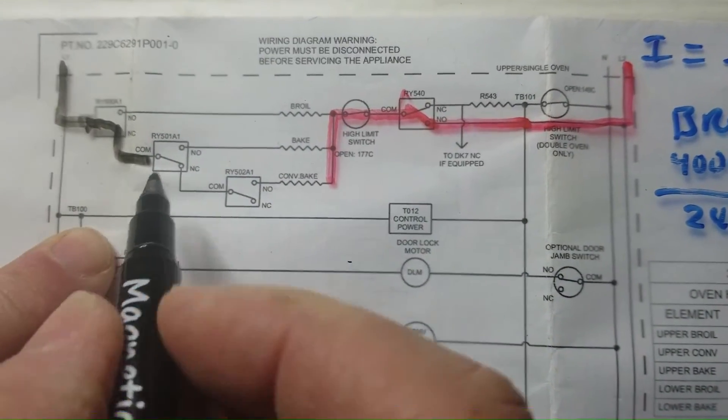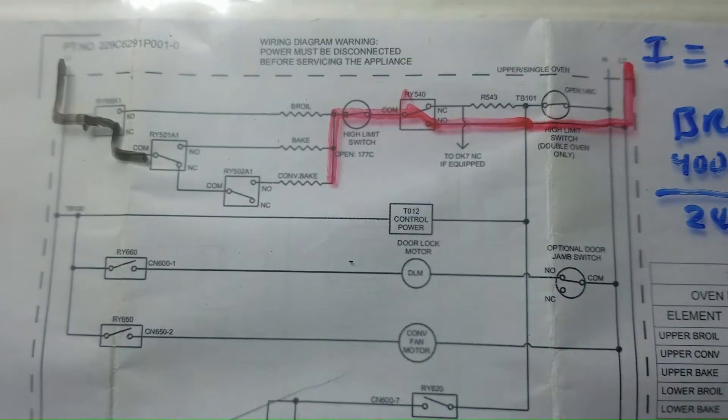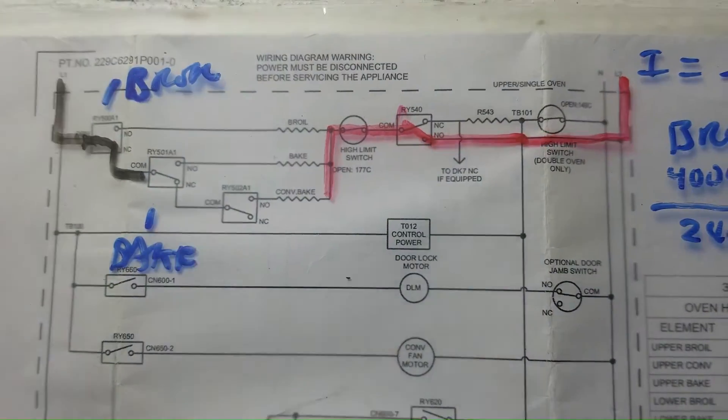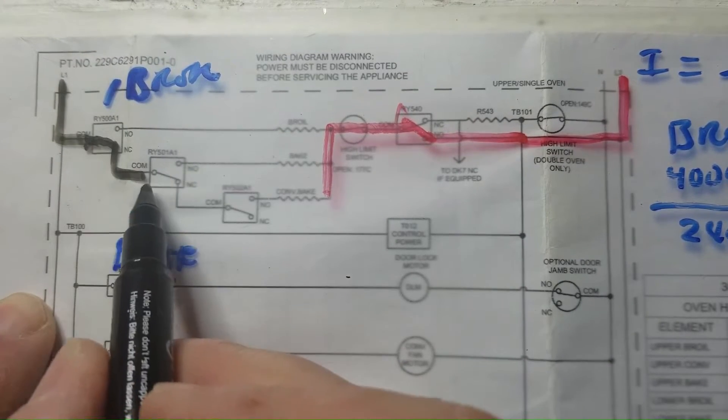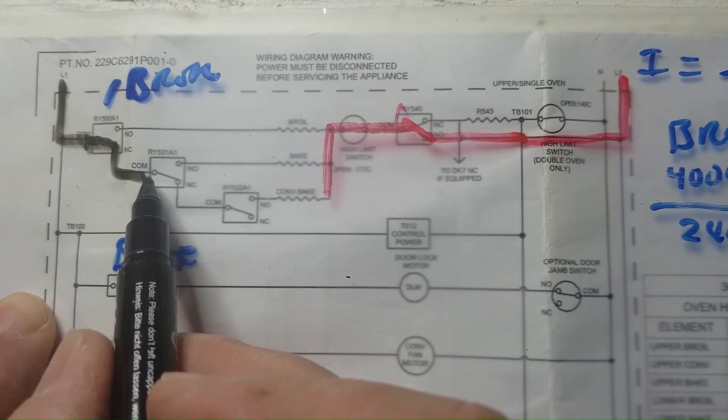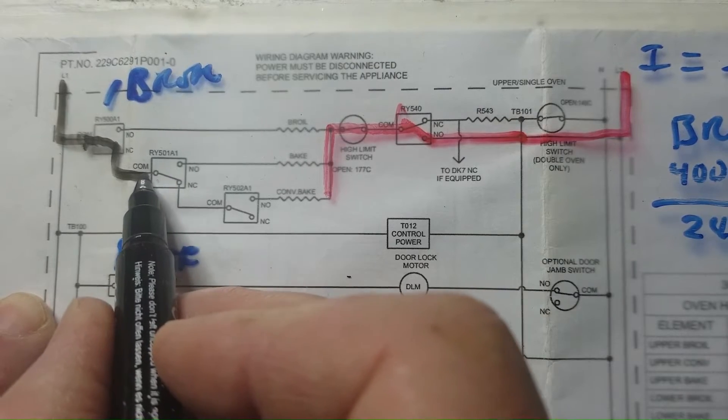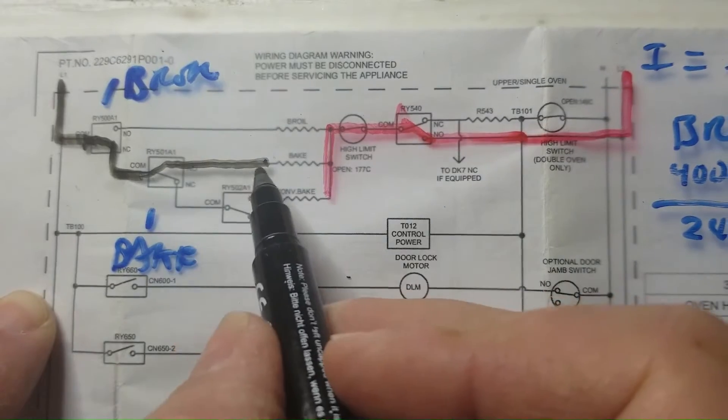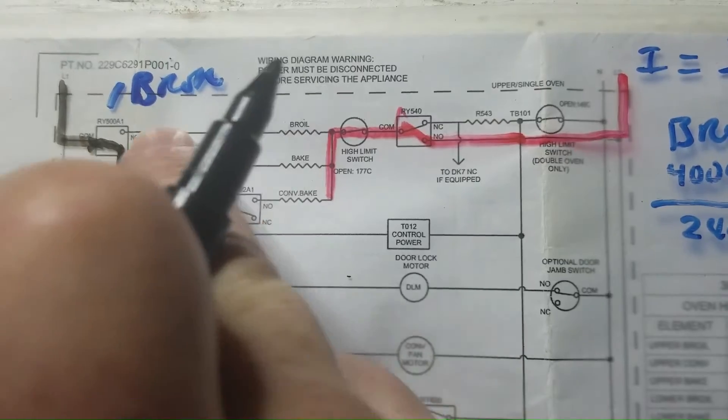This is your bake relay, this is bake here, this is broil here. So what happens is when this relay is normally closed and not activated, voltage appears at the common of the bake relay. When the bake relay is energized, this voltage will come over to here, this side of the bake element.